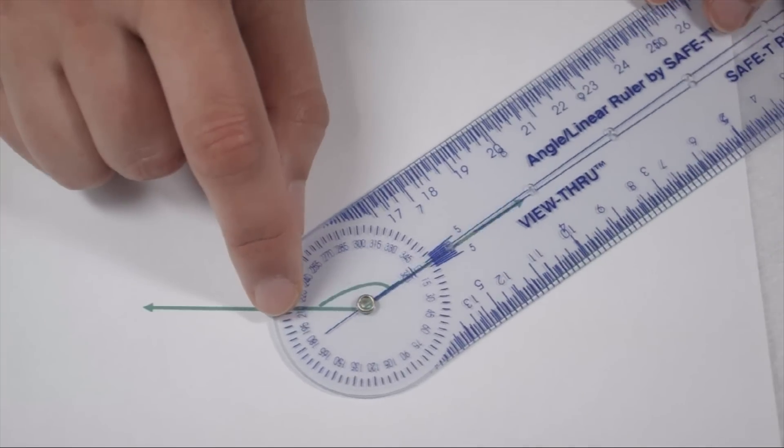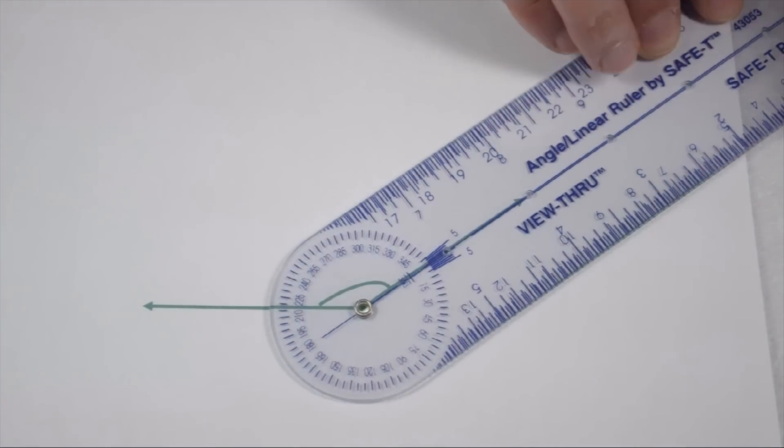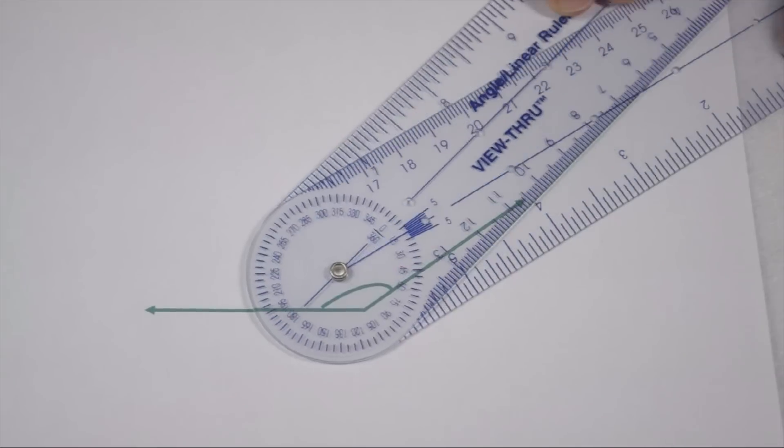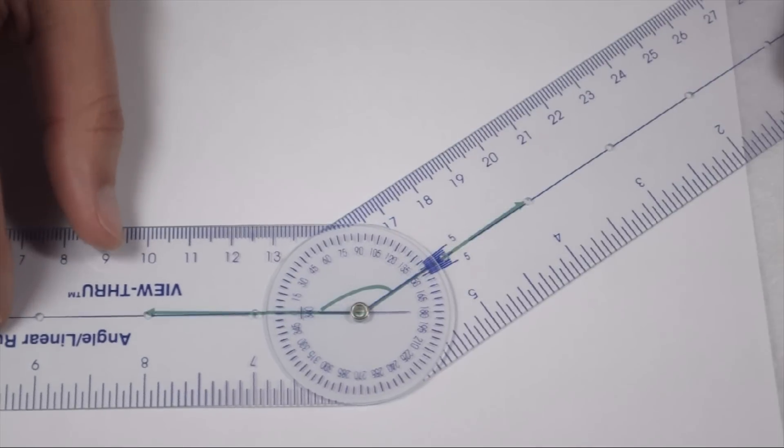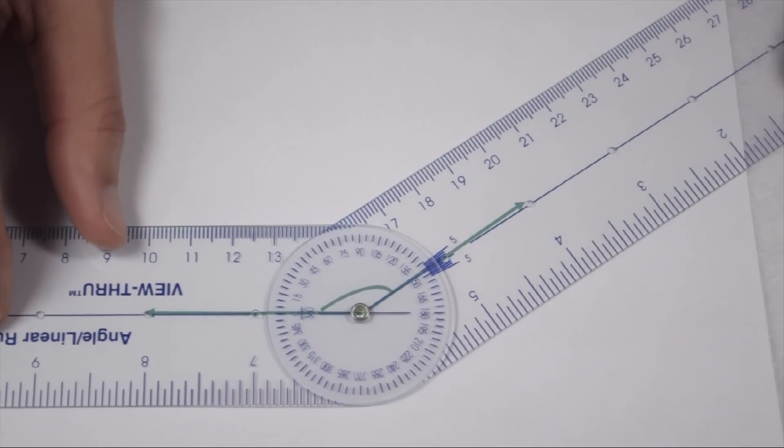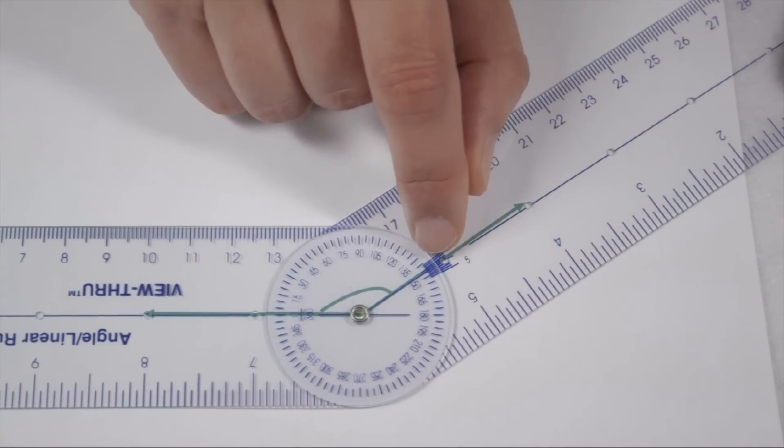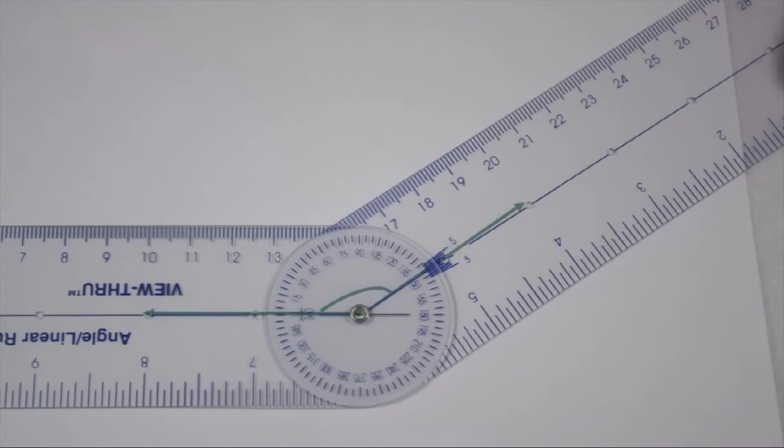I can rotate my angle ruler so it lines up along the right leg, and then swing the top arm around until it crosses. Now, we can see it crosses between 135 and 150.